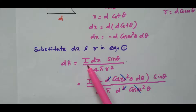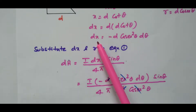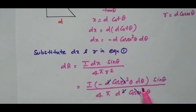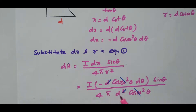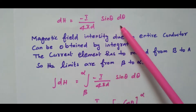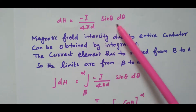We substitute dx and r into equation number 1: dH equals i dx sin theta divided by 4 pi r squared. Substituting dx equals minus d cosecant squared theta d theta and r equals d cosecant theta, we get i into (minus d cosecant squared theta d theta) into sin theta divided by 4 pi (d squared cosecant squared theta). The d in numerator and d squared in denominator cancel one d, and the cosecant squared theta cancels. After simplification, dH equals minus i divided by 4 pi d times sin theta d theta.